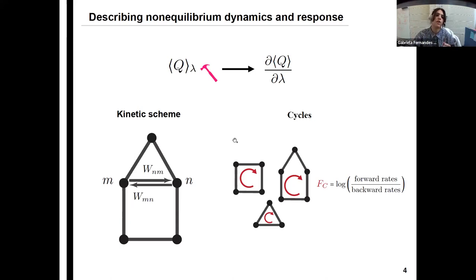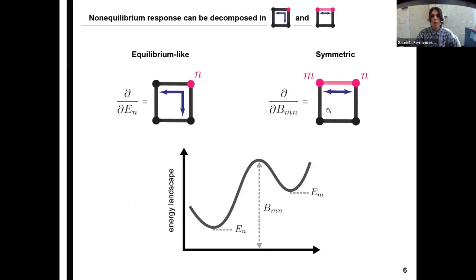A very important characteristic of such systems are cycles, which are trajectories that connect a state with itself without self-intersection. And for each cycle we can associate a cycle force, which is the log ratio of forward and backward weights in the cycle. And the cycle force tells us how far away from equilibrium our system is. And the way that we think of response and perturbation in this setup is to have the transition rates being dependent on the external parameter. So our approach to be able to detangle and understand all the possible perturbations that the system can possibly have is to decompose the perturbations in different categories.